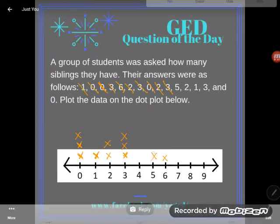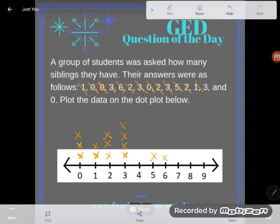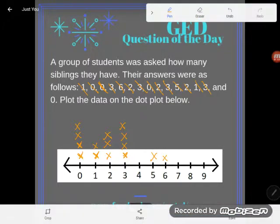And then I got a five, a two, a one, a three, and a zero. Simple! There you go, I plotted the data on the dot plot below. I should call it an X plot since I used X's, but same basic idea there.